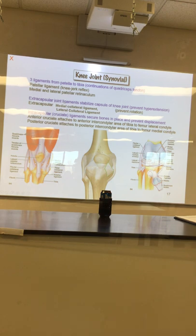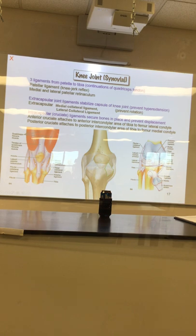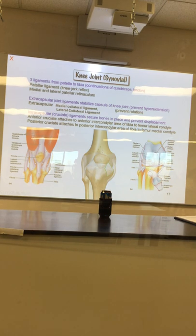The collateral ligaments keep the leg from going side to side. Then there are the cruciate ligaments.